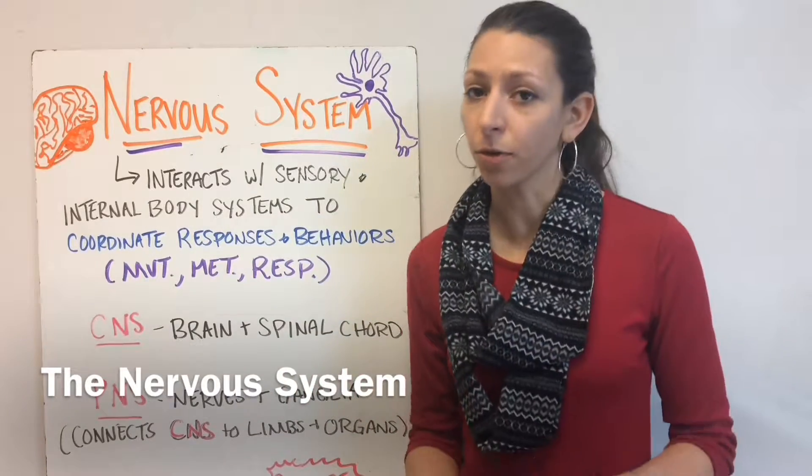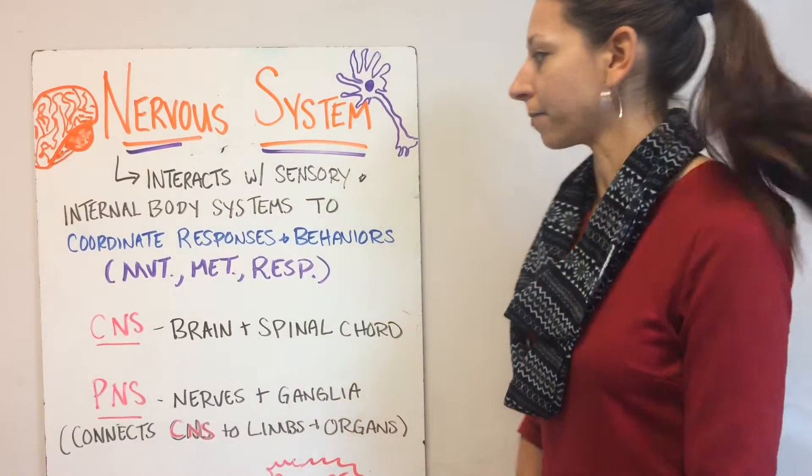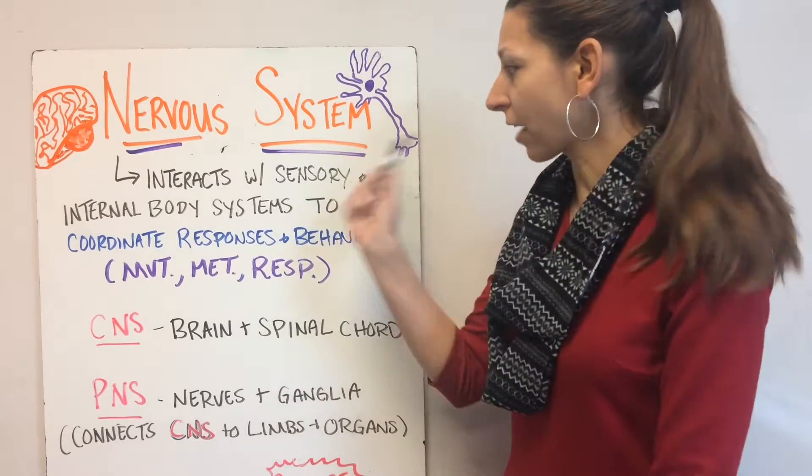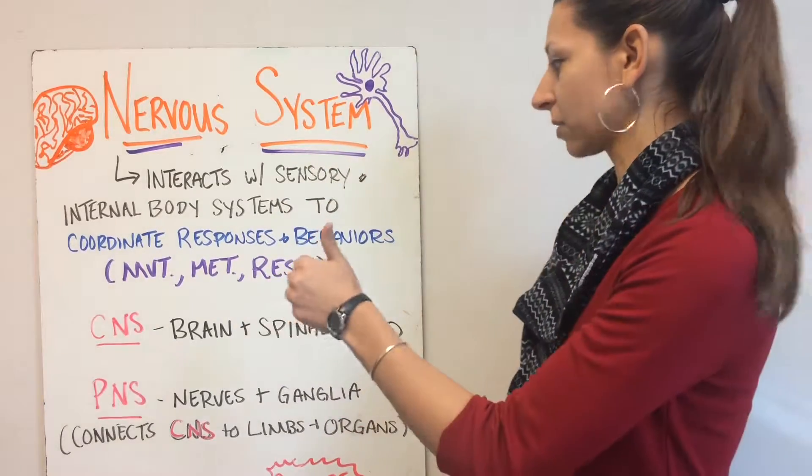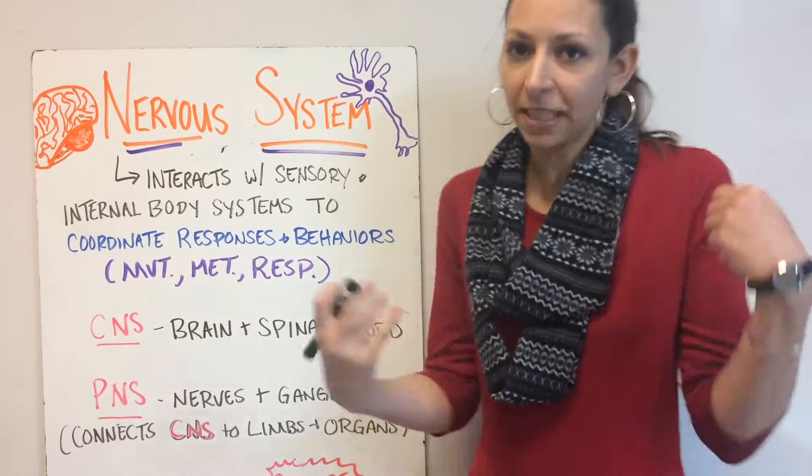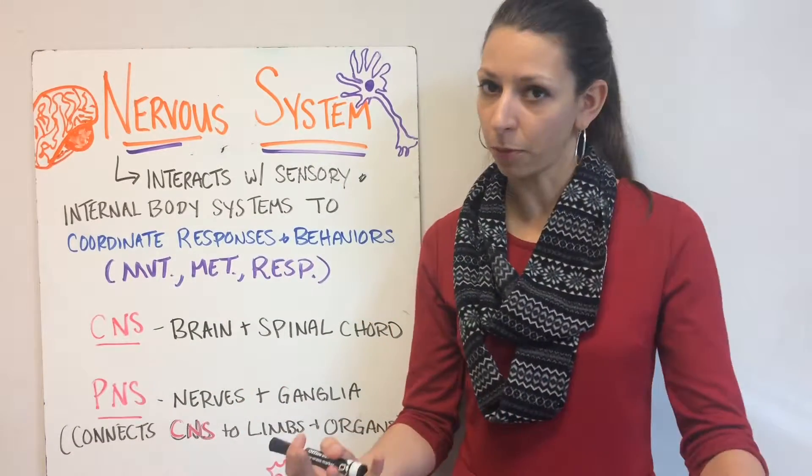The nervous system is a very important body system or system of organs. It interacts with sensory and internal body systems to coordinate responses and behaviors such as movement, metabolism, and respiration.